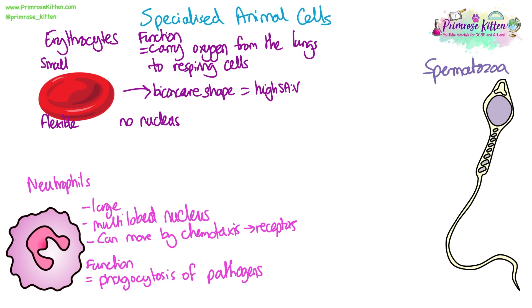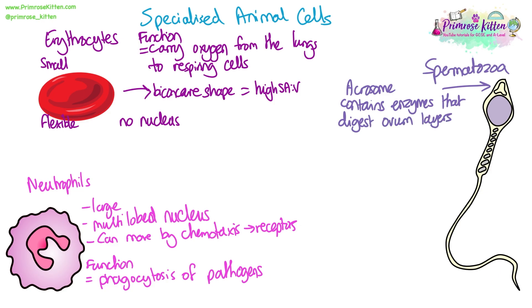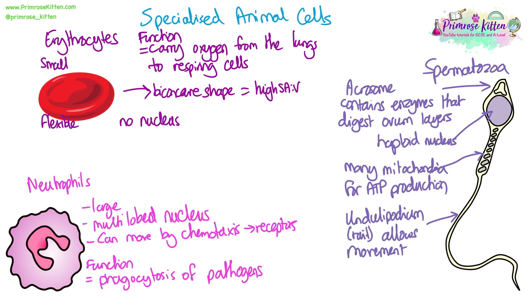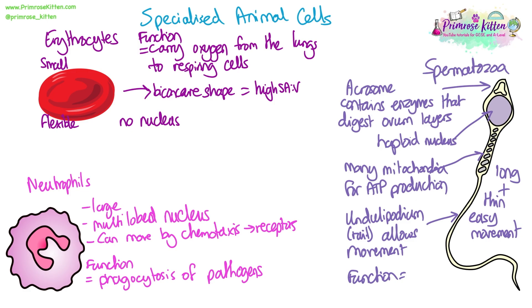A spermatozoa, or sperm cell, has a special structure called an acrosome at the tip of the head, which contains enzymes that digest the layers of the egg cell. It is a gamete, so it has a haploid nucleus, carrying half the number of chromosomes of a normal cell, allowing fertilization to restore the chromosome number. It has many mitochondria in the mid-section to produce lots of ATP needed for movement. It has a specialised tail — a flagellum, sometimes called an undulipodium — which allows it to swim by producing a whip-like motion. The whole sperm cell shape is adapted for movement, being very thin and narrow to propel itself through liquid.